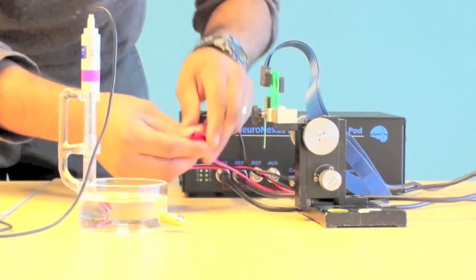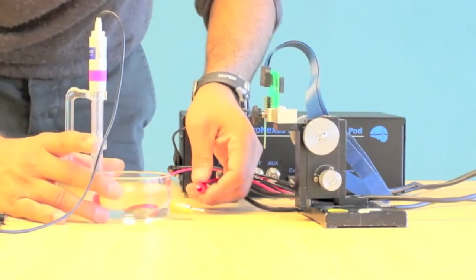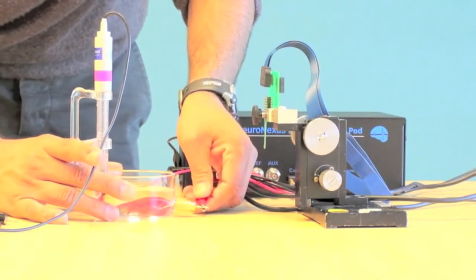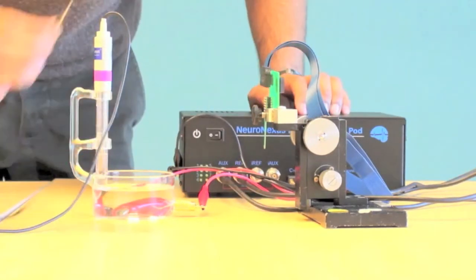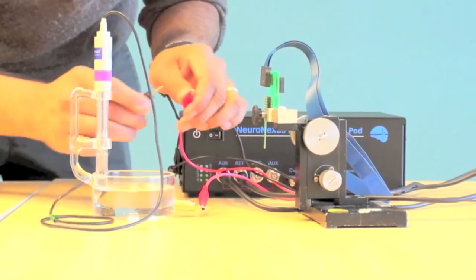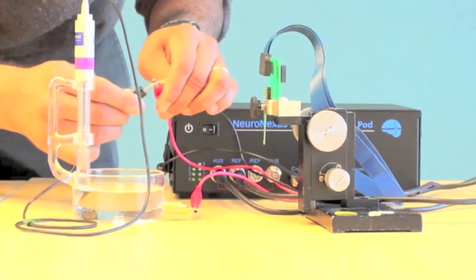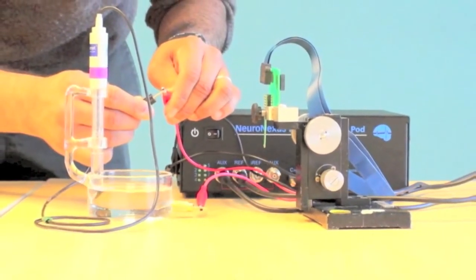Take the BNC cable that is plugged into the AUX port of the Nipod and clip the corresponding red clip to the gold counter electrode pit. Then connect the black reference pin from the calomel electrode to the corresponding red alligator clip that is connected to the reference port.